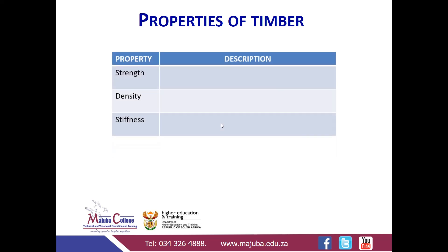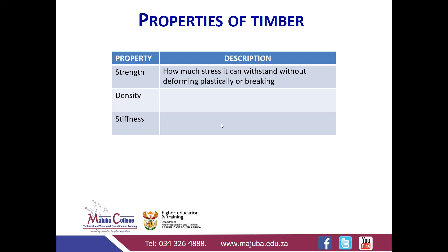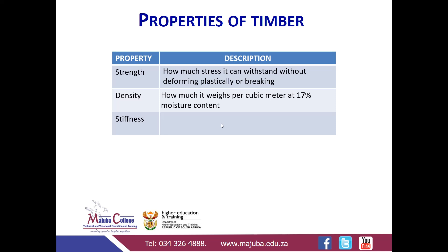Properties of timber. The first property is strength. The other ones are density and stiffness. You must be able to define these properties. The question will say: discuss the relationship between strength, density, and stiffness. Strength is how much stress it can withstand without deforming plastically or breaking. Density is how much it weighs per cubic meter at 17% moisture content — meaning, for your timber to have strength and return to its original shape, it must have a certain moisture content, which is 17%.